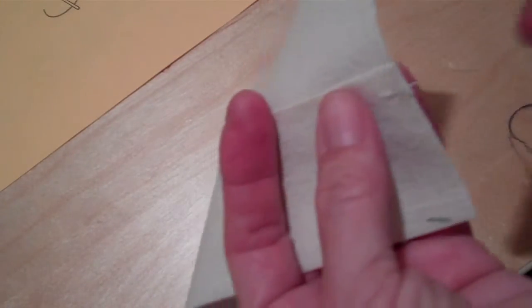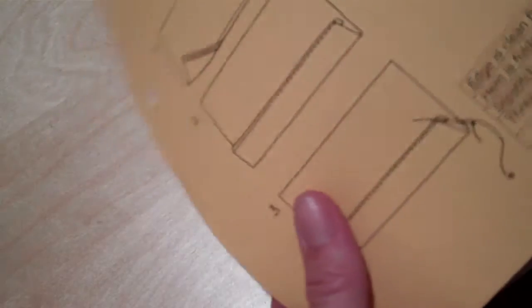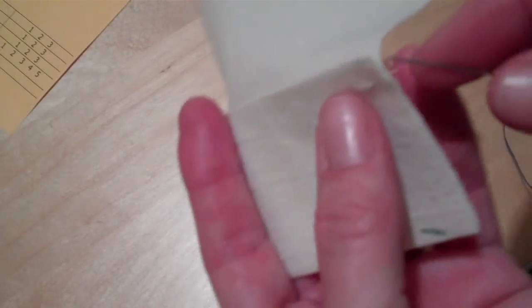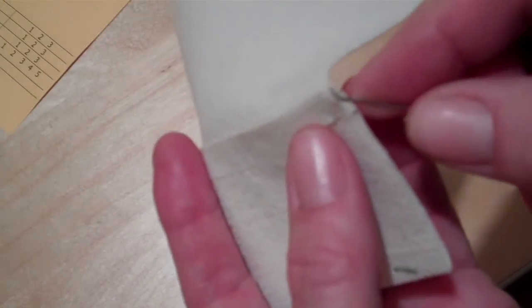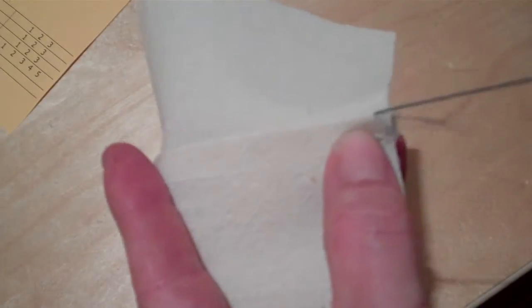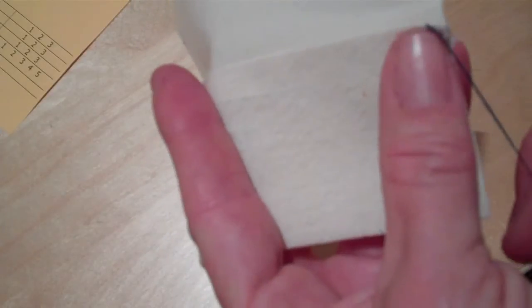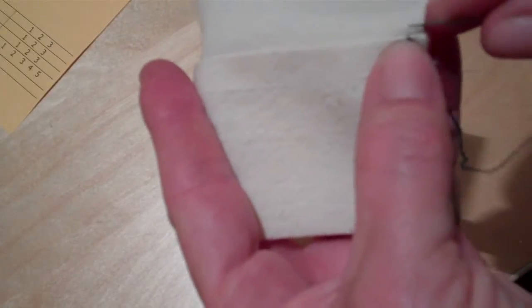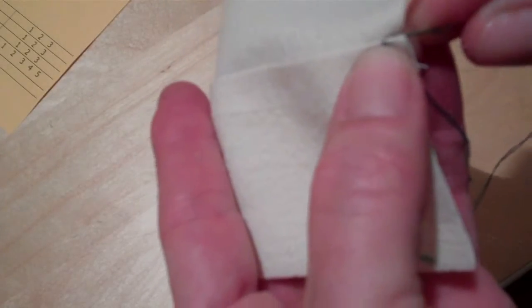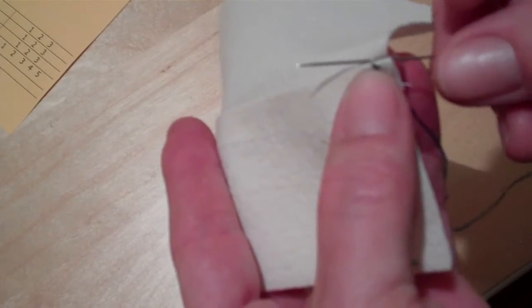So you start off by bringing your knot through the little tunnel. We've created a tunnel with this clean finish. So I'm going to go inside the tunnel and come out the top right at the fold. Then exactly from where I came out of the fold, I'm going to pick up a thread or two of the fabric.